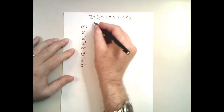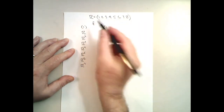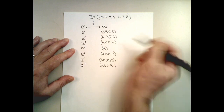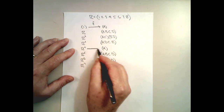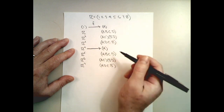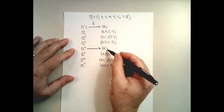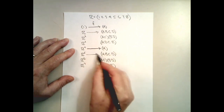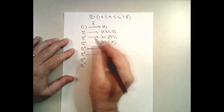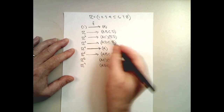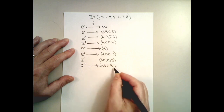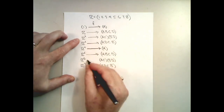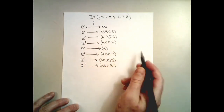I'm going to call this function F. It's going to take the identity permutation of the rotation group to the identity permutation of the letter group. But it's also going to take four rotations to the identity permutation of the letter group. I'm going to send one rotation to the cycle A, B, C, D, and also send five rotations to A, B, C, D. Two rotations to A, C and B, D. Three rotations to A, D, C, B. And seven rotations also go to A, D, C, B. Two rotations and six rotations both go to the A, C and B, D permutation.